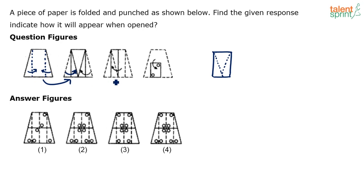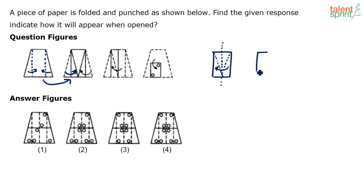From the second figure to the third figure, we are dividing this rectangle into two halves and folding the right half over the left half. So we are left with half of that rectangle.